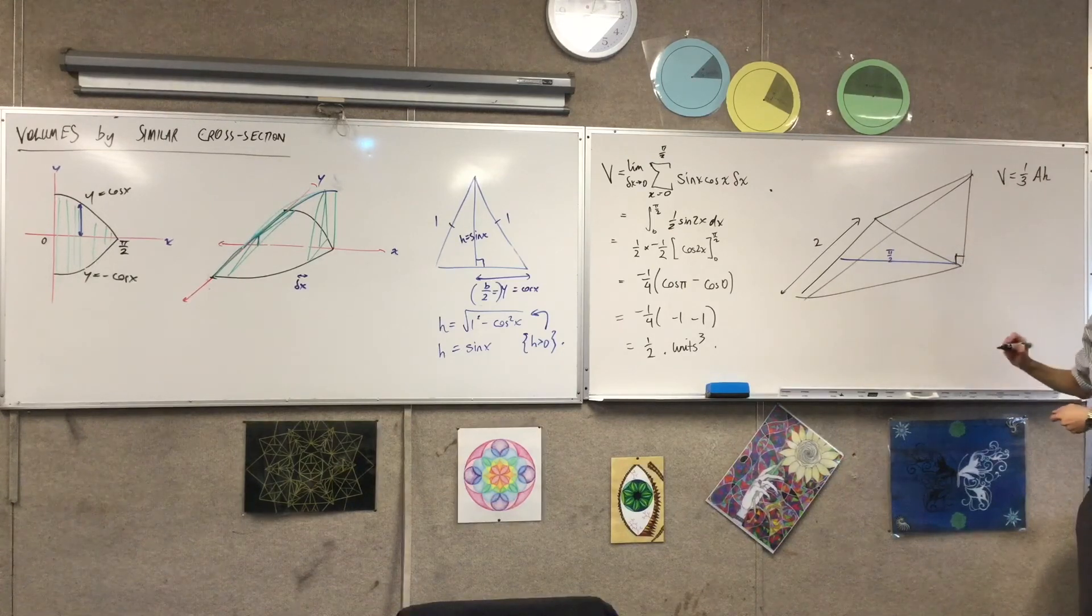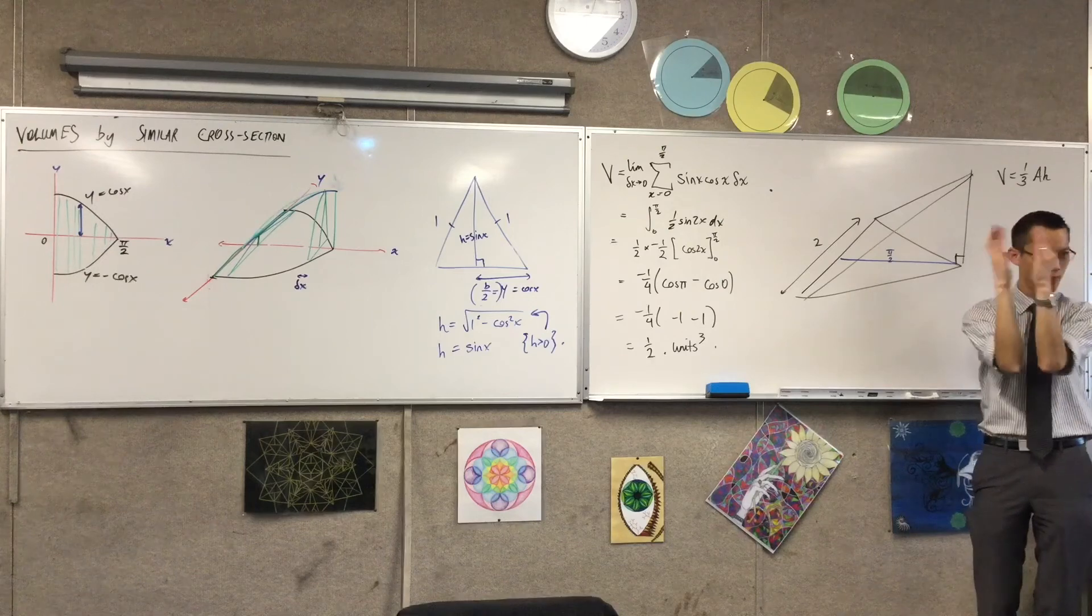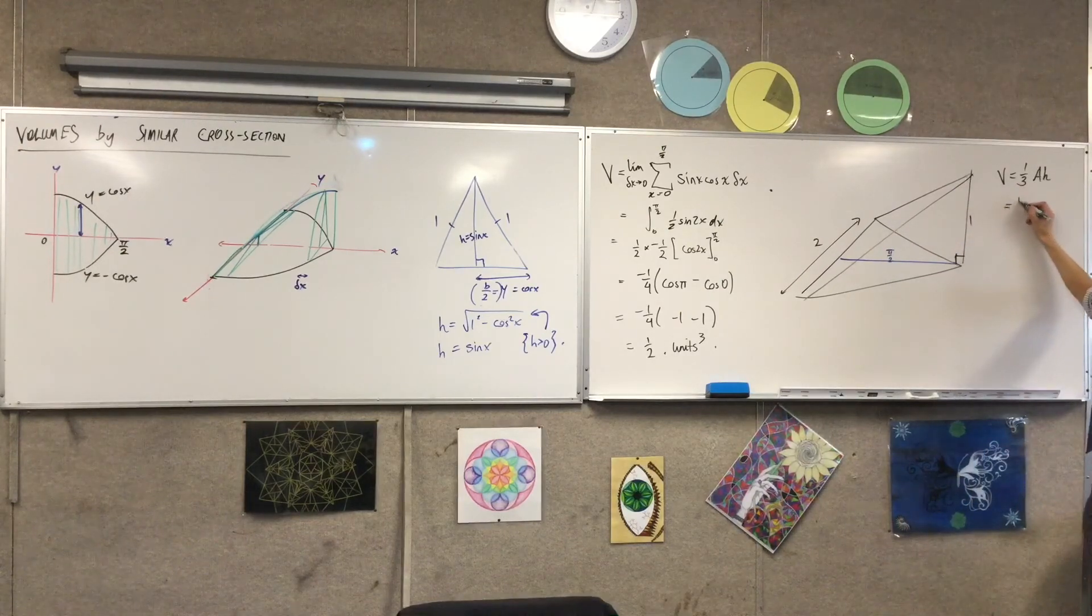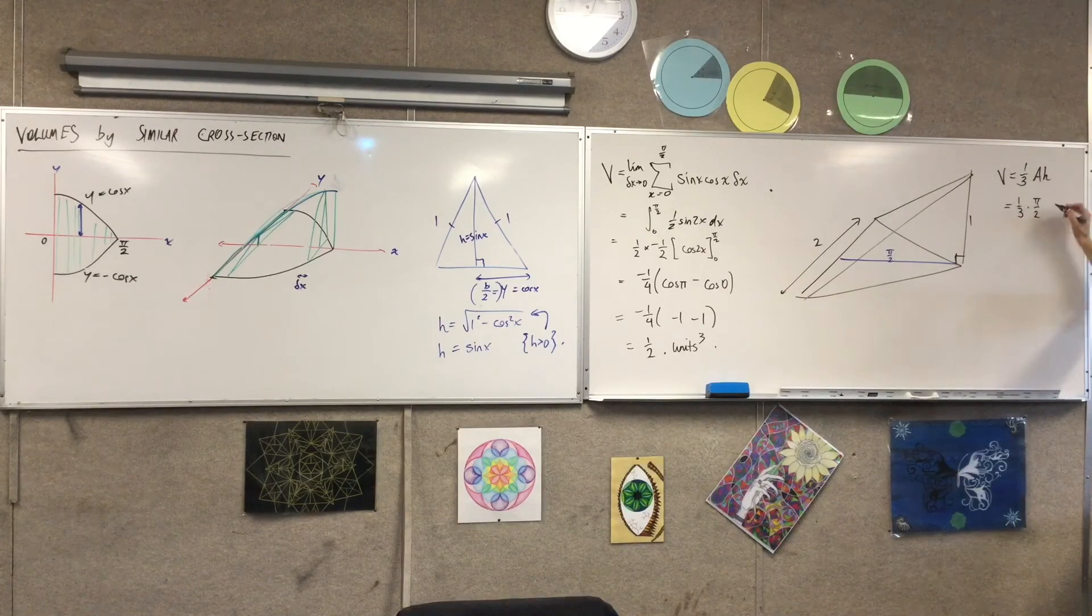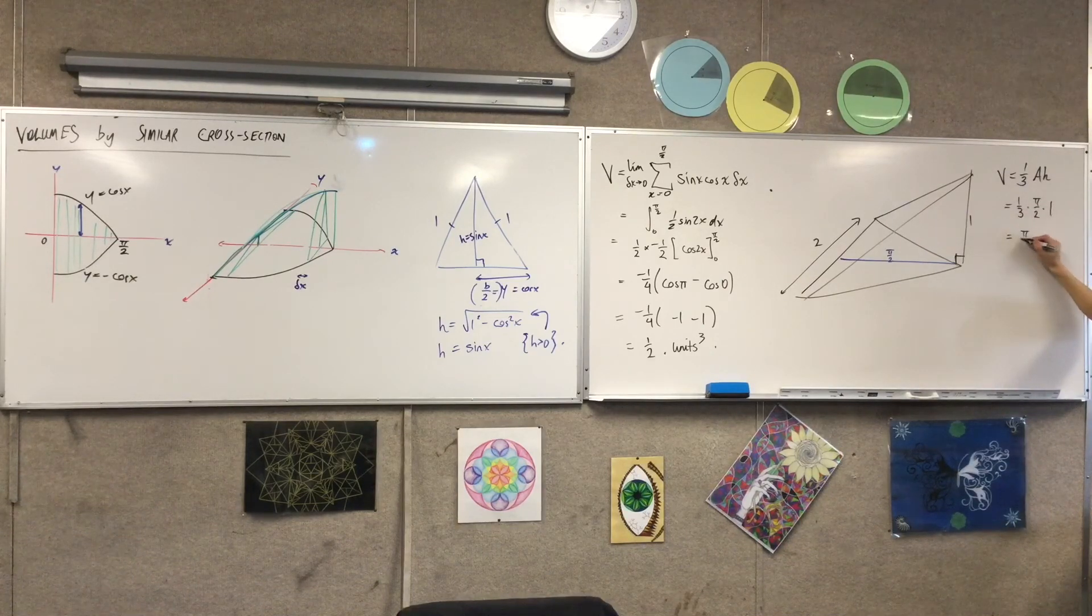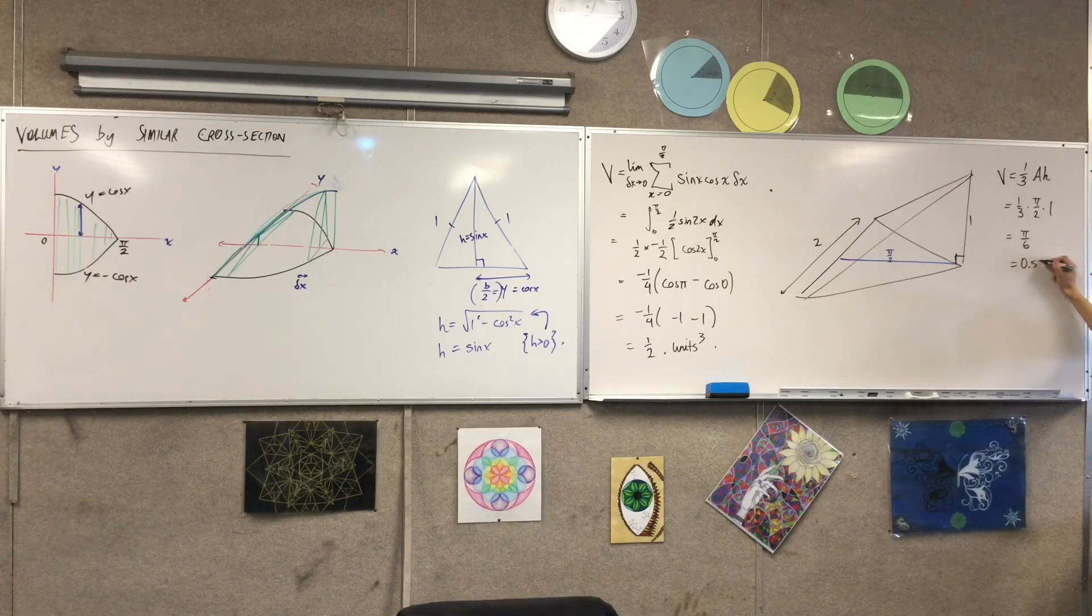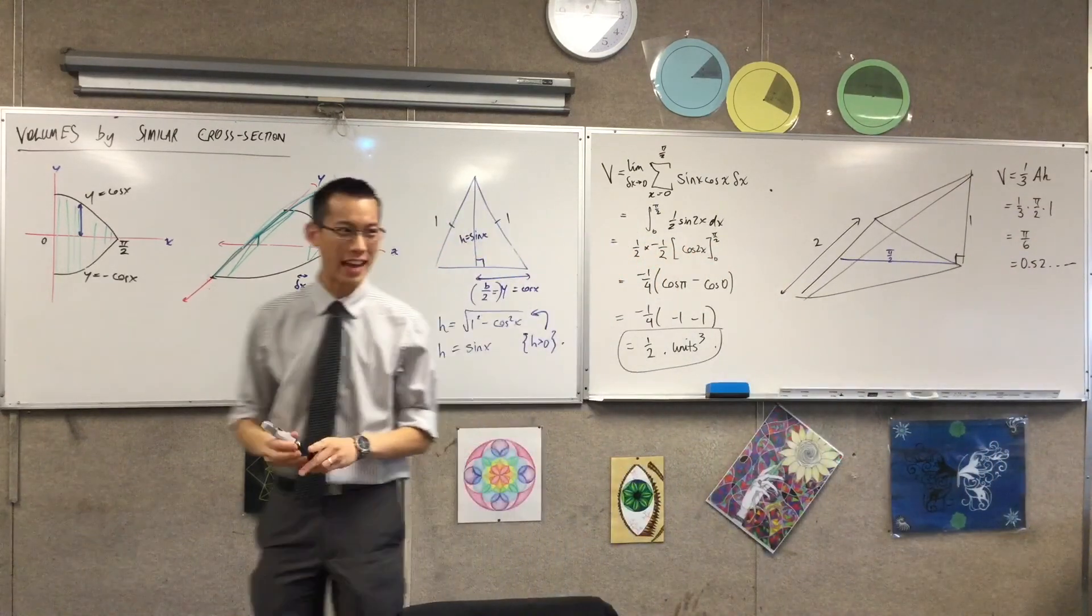What about the height of this pyramid? I've actually got a perpendicular here, right? And this has to be this thin one by one isosceles triangle. So that gives me a height. A third times, you told me the base area is pi on two. You said the height was one. So this apparently is pi on six. Which I think you'll find is about 0.52, which is not too shabby at all.